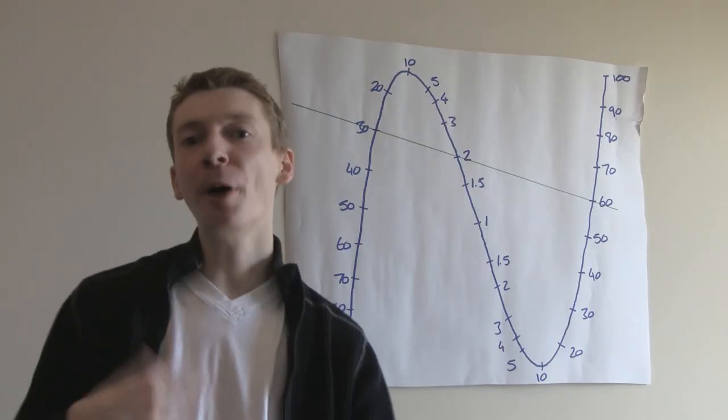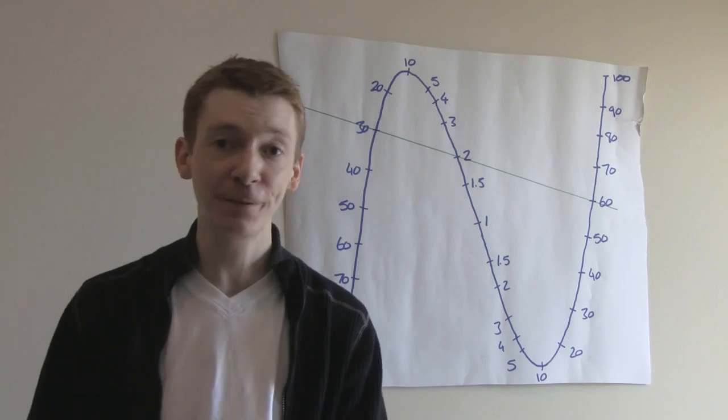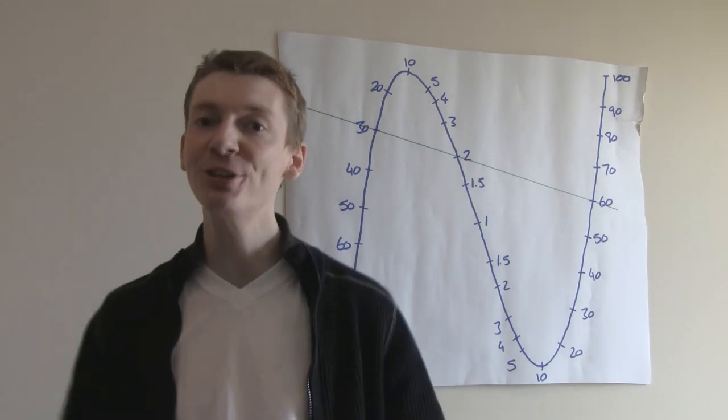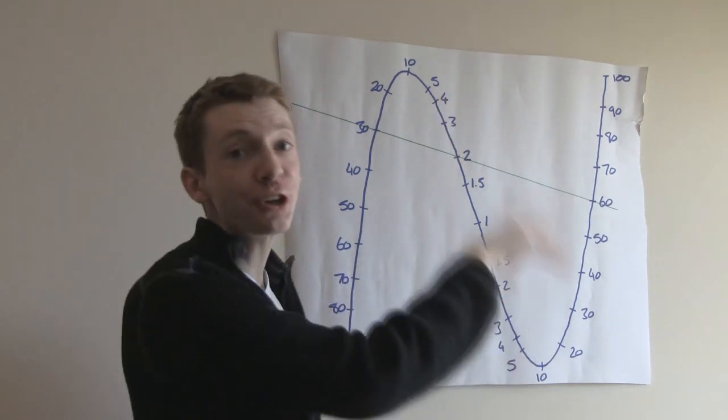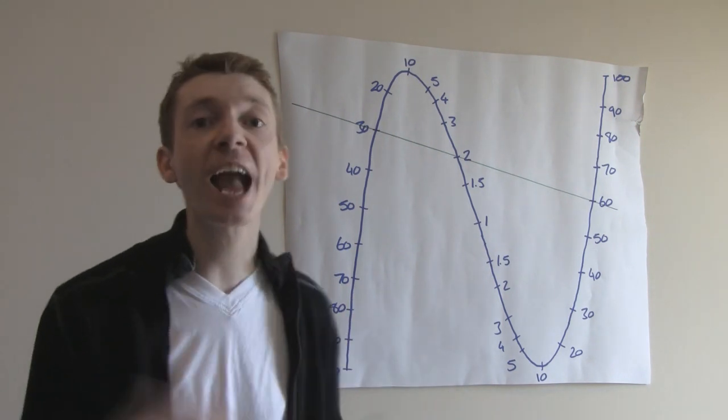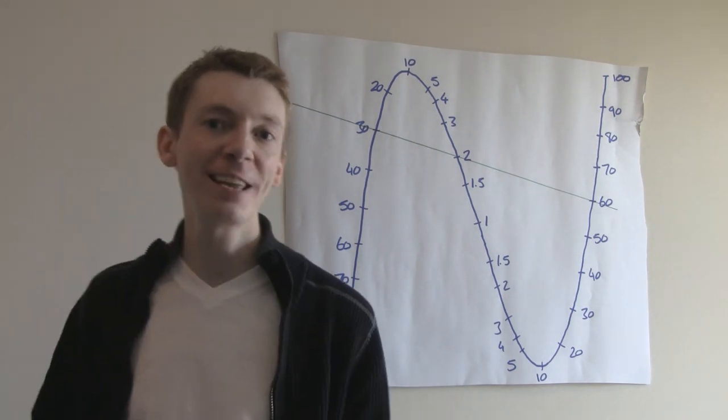If you're familiar with polynomials, then the explanation for this is fairly straightforward. But if you're not familiar with polynomials, then this will be new to you. This is a cubic curve. The equation for this curve was actually y equals x cubed minus 3x.